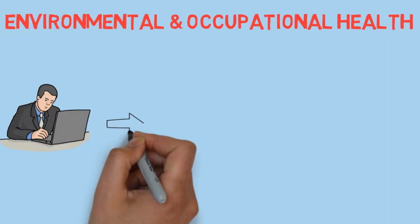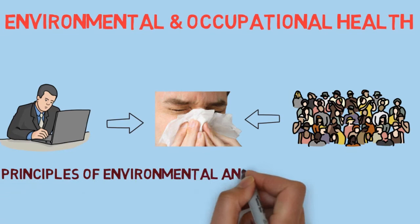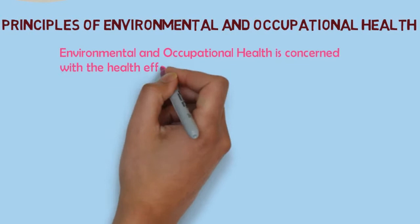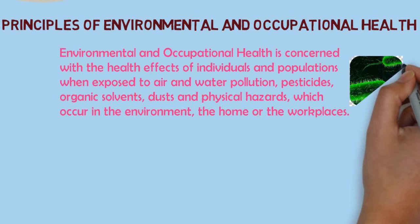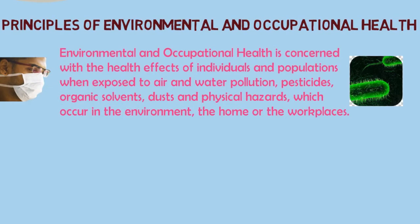Let's look at the basic principles of environmental and occupational health. Environmental and occupational health is concerned with the health effects of individuals and populations when exposed to air and water pollution, pesticides, organic solvents, dust and physical hazards which occur in the environment, the home or workplaces.